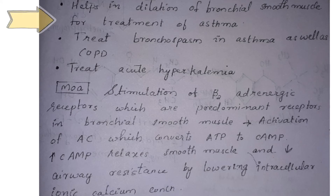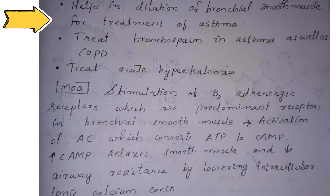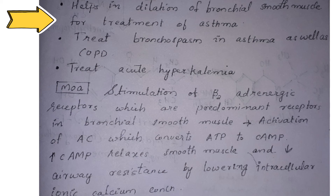The uses are: it helps in dilation of bronchial smooth muscle for treatment of asthma. Also treats bronchospasm in asthma as well as COPD. To treat acute hyperkalemia. Now let's discuss the mechanism of action of salbutamol.